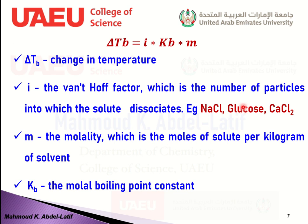For example, if you add a covalent or molecular compound like glucose, it will not dissociate, so i equals 1. If you add an ionic compound like sodium chloride, it dissociates into sodium cation and chloride anion, so i equals 2. Calcium chloride dissociates into one calcium cation and two chloride anions, so i equals 3. The Van't Hoff factor is always an integer.